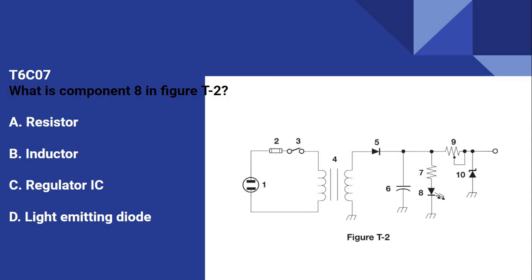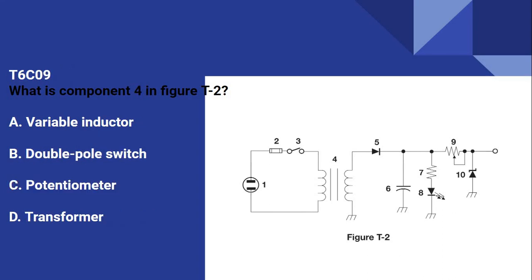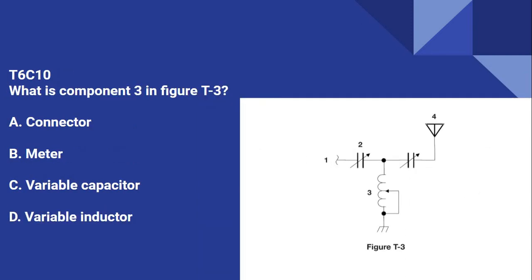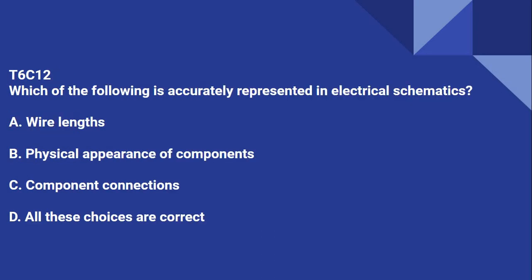T6C07: What is component 3 in figure T2? That is a light-emitting diode. T6C08: What is component 9 in figure T2? Variable resistor. T6C09: What is component 4 in figure T2? Transformer. T6C10: What is component 3 in figure T3? That is a variable inductor. T6C11: What is component 4 in figure T3? That is the antenna. T6C12: Which of the following is accurately represented in electrical schematics? And the answer is component connections.